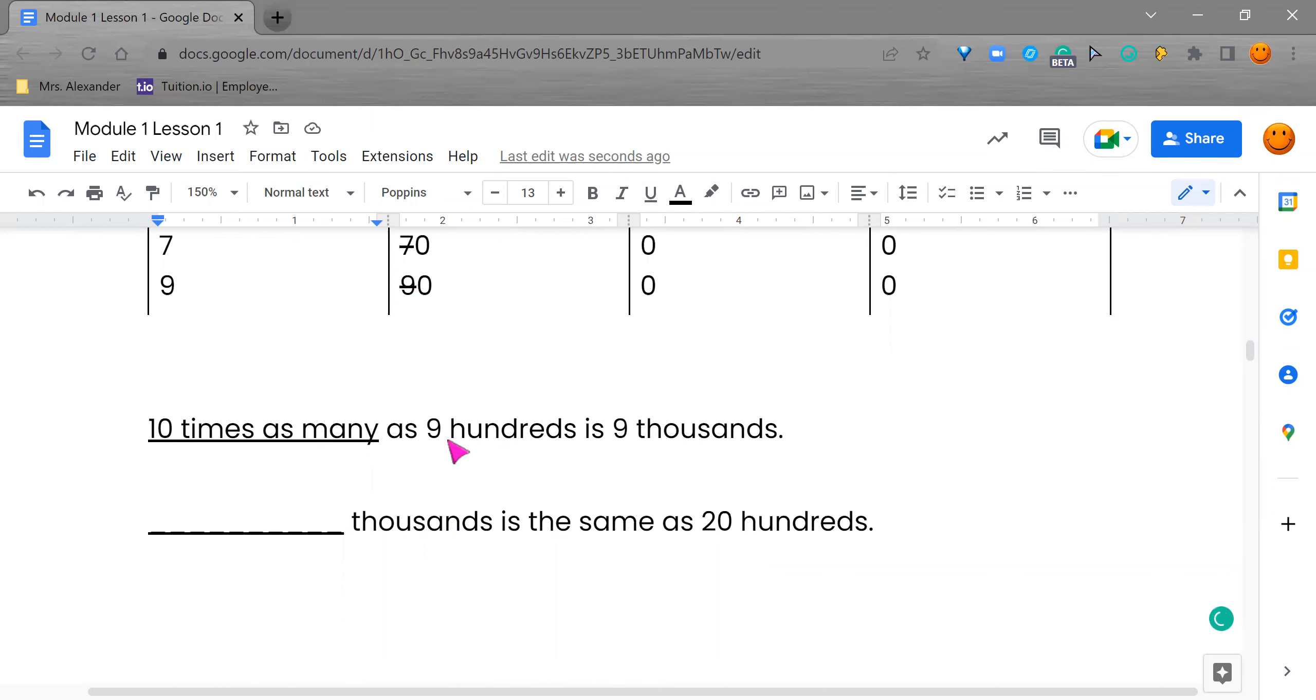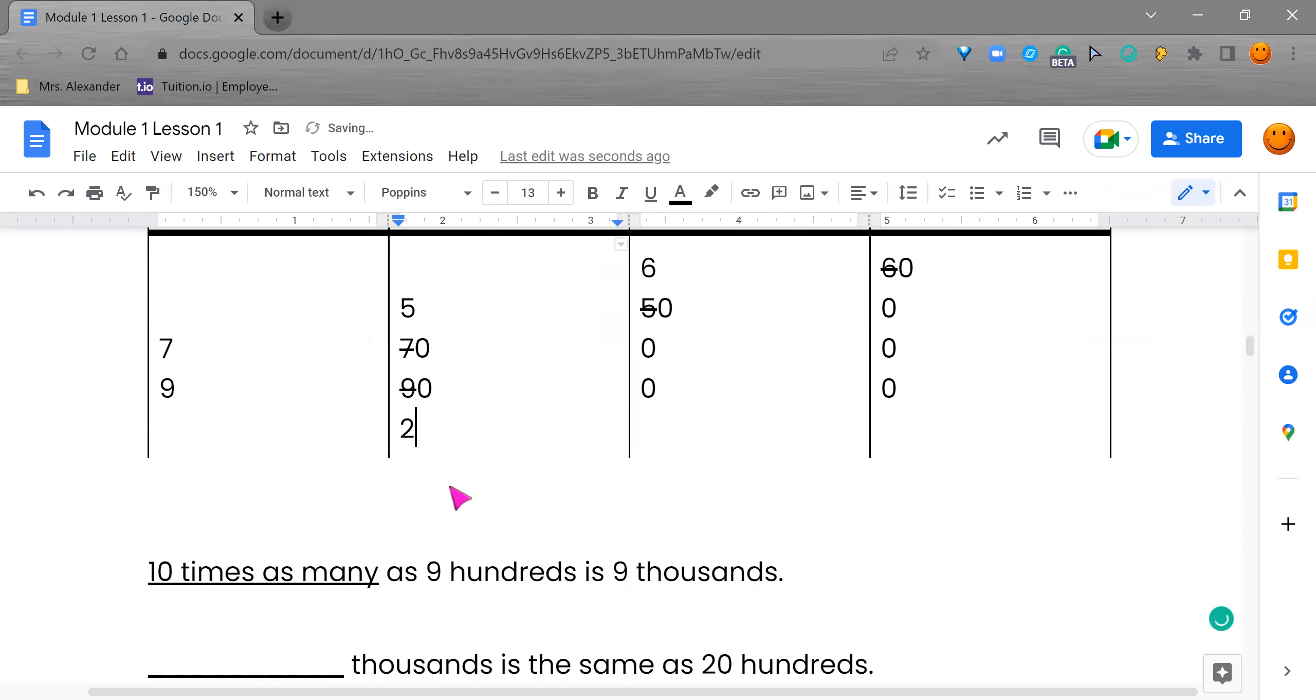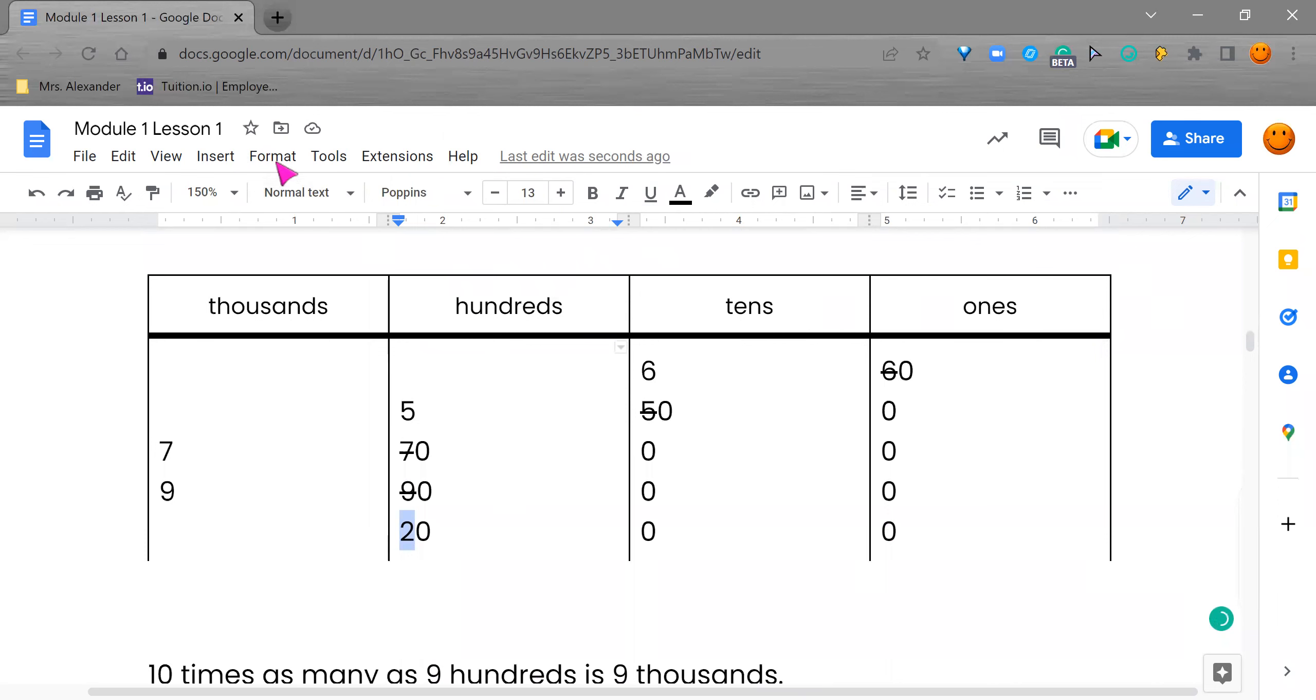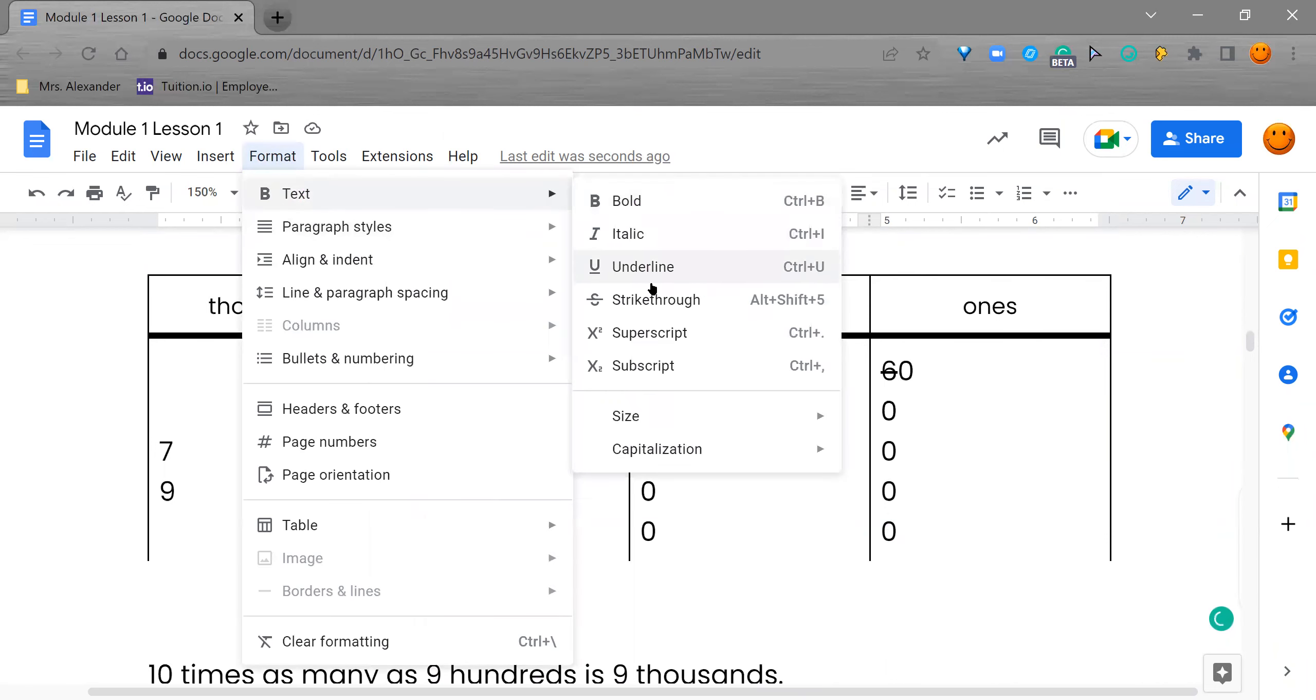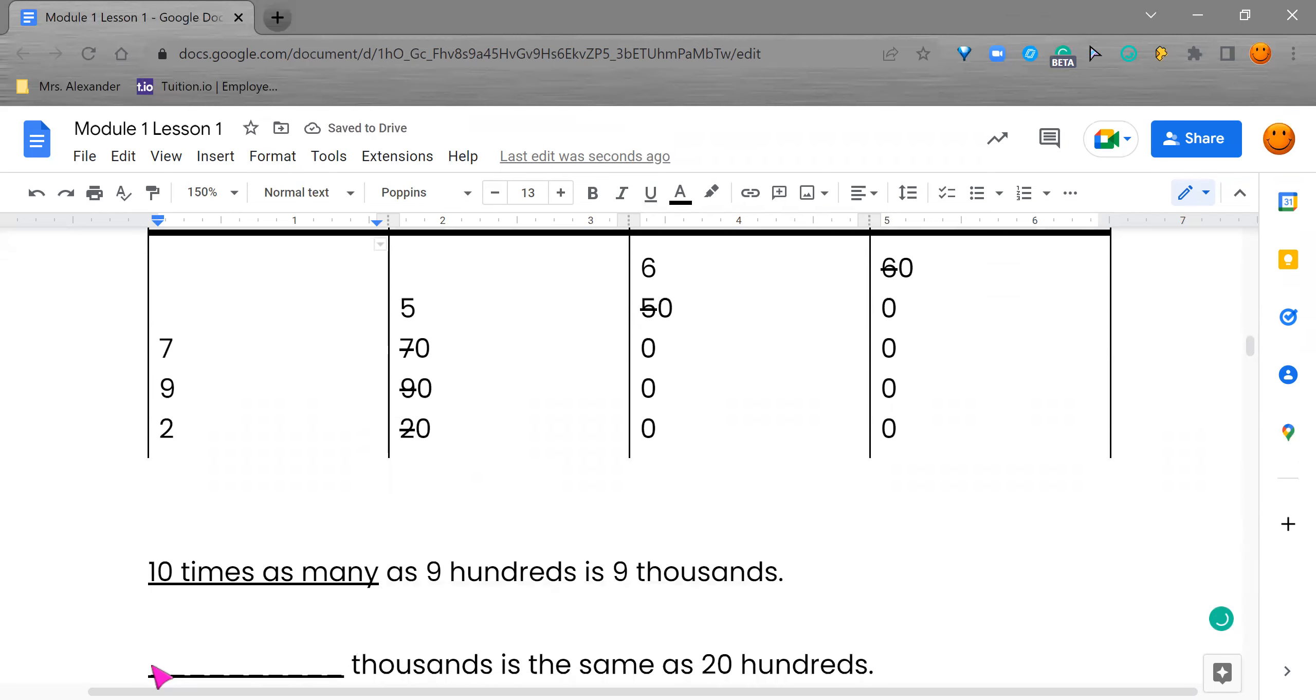Let's go to the last one. We have blank thousands is the same as 20 hundreds. So I'm just going to jump right back up here to our place value chart. I'm going to go to the hundreds because it says 20 hundreds. I'm going to write 20 hundreds. And I know because of that, I don't have tens and I don't have ones. Now I've got to figure out how many thousands is the same as 20 hundreds. Well, we know we can only have one digit in the hundreds position. So I need to cross off this 2 by going to text and then strike through. And then that 2 gets jumped over to the thousands. So it looks like 20 hundreds is the same as 2 thousands. So our statement becomes true when we say 2 thousands is the same as 20 hundreds.